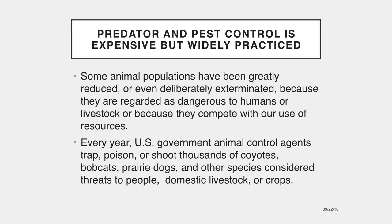Some animal populations have been greatly reduced or even deliberately exterminated because they are regarded as dangerous to humans or livestock, or because they compete with our use of resources. Every year, U.S. government animal control agents trap, poison, or shoot thousands of coyotes, bobcats, prairie dogs, and other species considered threats to people, domestic livestock, or crops. This animal control effort costs about $20 million in federal and state funds each year and kills some 700,000 birds and mammals, about 100,000 of which are coyotes. Defenders of wildlife regard this program as cruel, callous, and mostly ineffective in reducing livestock losses. Protecting flocks and herds with guard dogs or herders, or keeping livestock out of areas that are the home range of wild species, would be a better solution, they believe. Ranchers, on the other hand, argue that without predator control, western livestock ranching would be impossible.